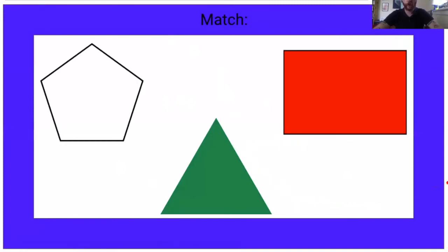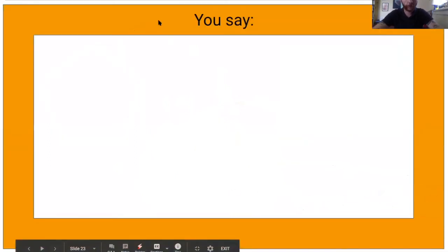Match triangle. Similar to an inclined plane, a wedge is typically going to be in the shape of a triangle. Match triangle. You say wedge.